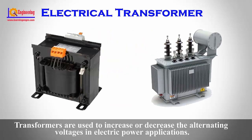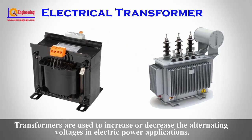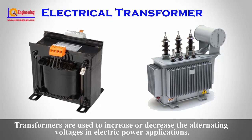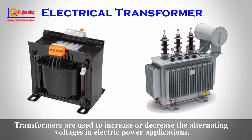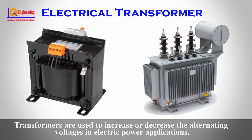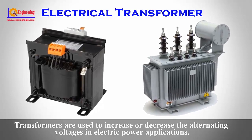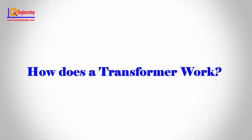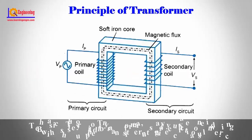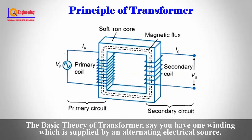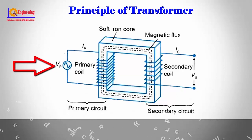Transformers are used to increase or decrease the alternating voltages in electric power applications. Now we discuss how a transformer works. The basic theory of a transformer: you have one winding which is supplied by an alternating electrical source.